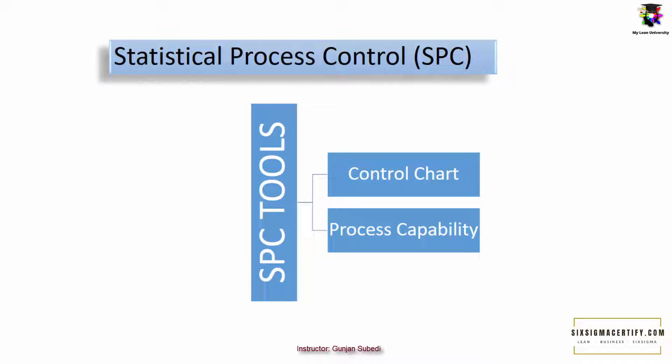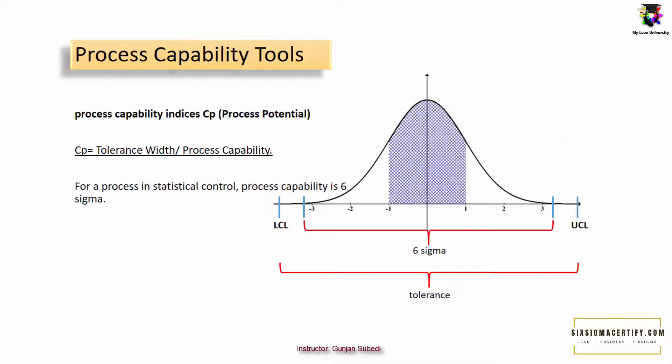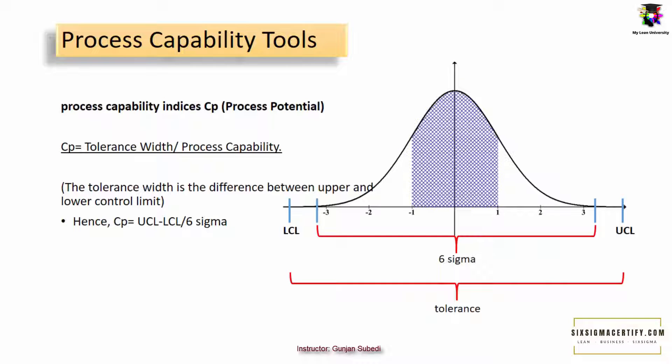For now let's dive into process capability again. So coming to this point, you have understood that the process capability is one of the tools of statistical process control along with control chart. We define process capability as the measure of ability of a process to meet or exceed the specification on a consistent basis. Let us see some terms used in process capability. So for this, let us learn about the process capability index Cp, which is also known as process potential. Cp equals tolerance width divided by process capability. For a process in statistical control, process capability is six sigma. The tolerance width is the difference between upper and lower control limit. Hence, Cp is upper control limit minus lower control limit divided by six sigma.